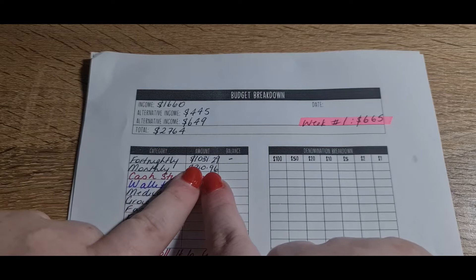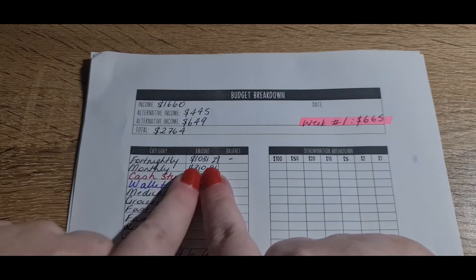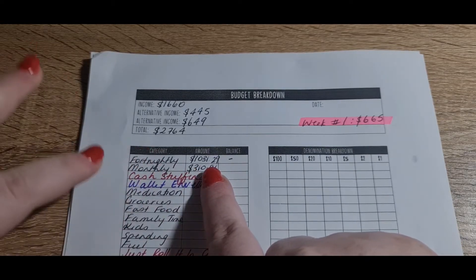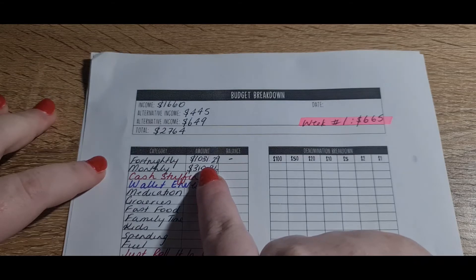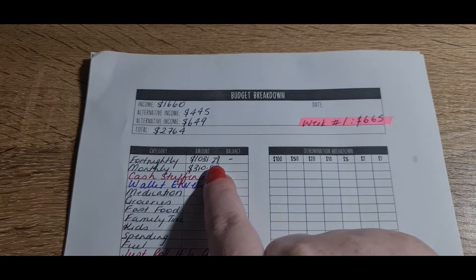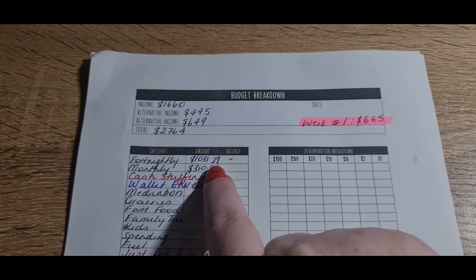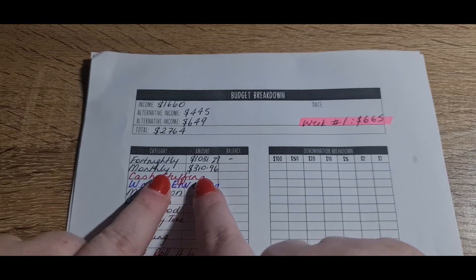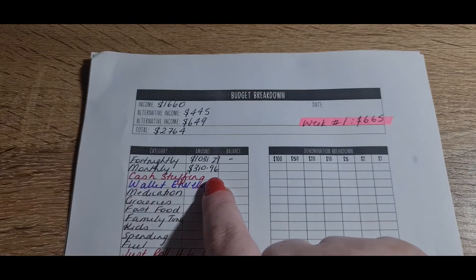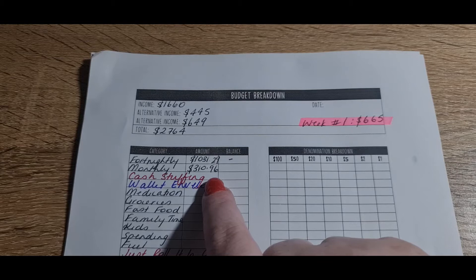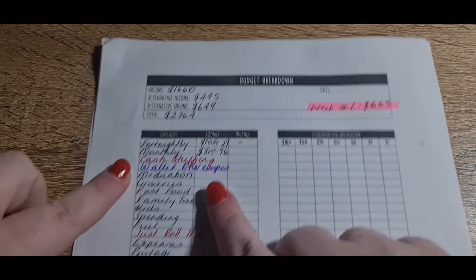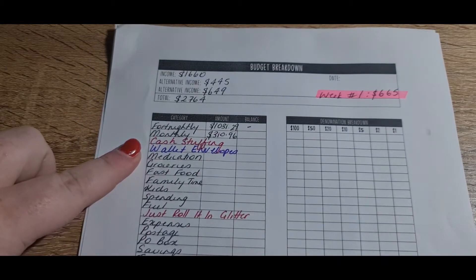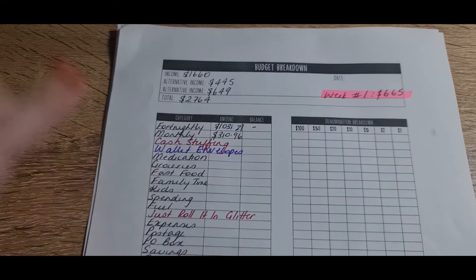For example here, the first thing I do is when I get paid, I pay my fortnightly bills. So the $1,031.29 goes straight into my fortnightly bank account. The monthly is $310.96, and that goes straight into my monthly bank account.